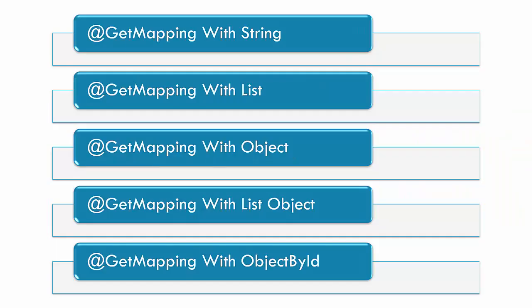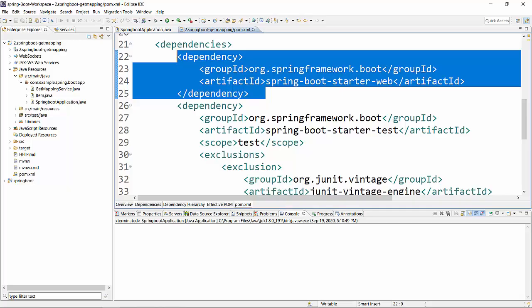Now talking about the content of this video: we will see GetMapping with string, GetMapping with list where the method will return a list of strings, and then we'll talk about the real-time scenario where GetMapping will return an object or a list of objects, and then object by ID. So let's begin.